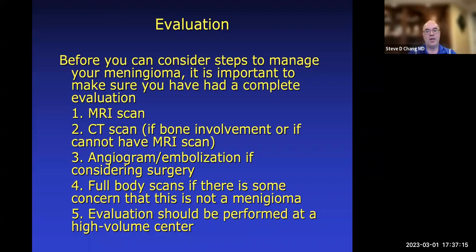If you're going down a surgical resection route and the meningioma is large, we may consider doing an angiogram and/or embolization. An angiogram looks at the blood vessels of the brain using a catheter fed into the arteries. Large meningiomas can have a very brisk blood supply, and embolization involves gluing blood vessels that go to the meningioma — this reduces blood supply in preparation for surgery.